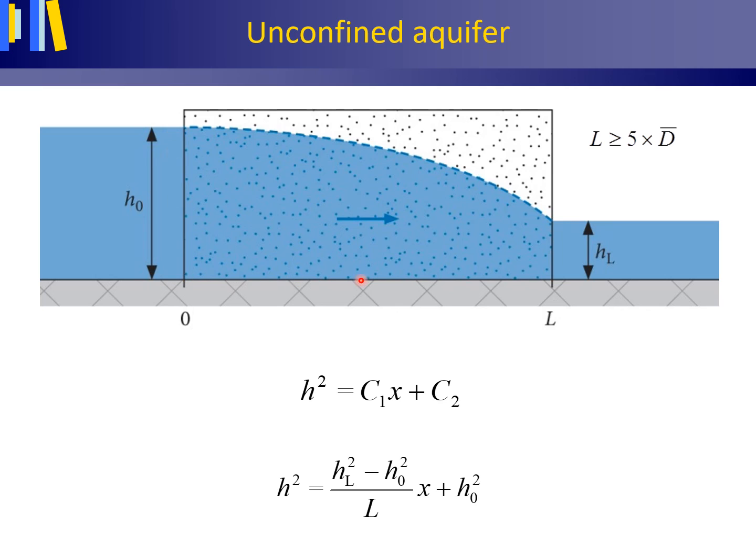And then the right boundary condition for x=L, H equals HL to deliver C1. And inserting these values into this equation delivers this equation.